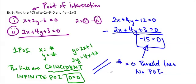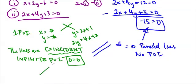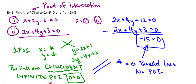Those are the three methods we can use: elimination, substitution, or graphing. Parallel lines give a false statement like a number equals zero — no POI. Intersecting lines give one point of intersection. Coincident lines give infinite POI and a statement like 0 equals 0. That's it — I hope you enjoyed it, and I will see you in class. Thanks for watching.